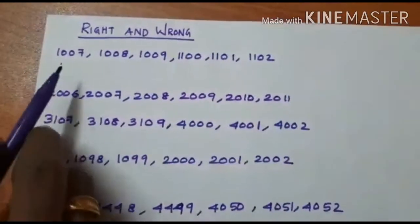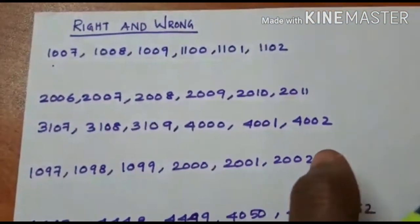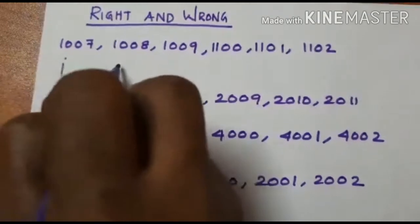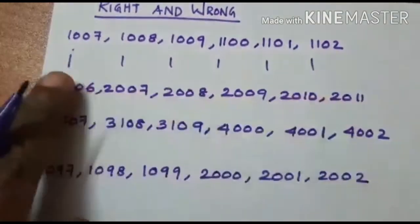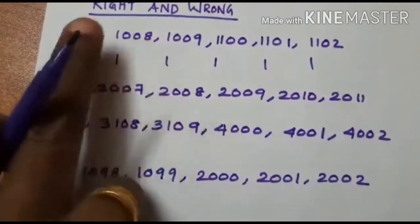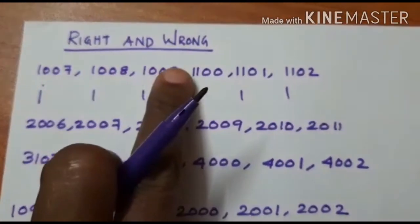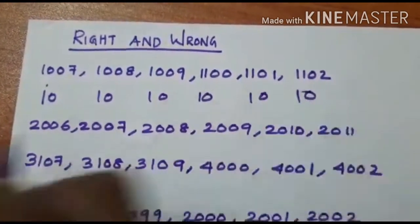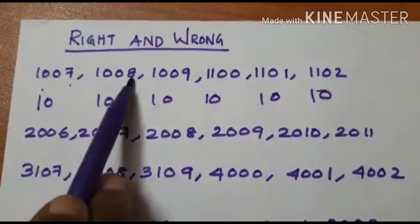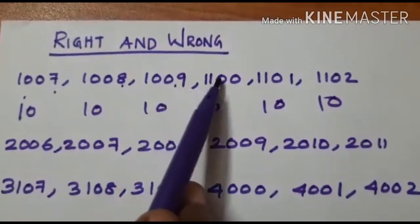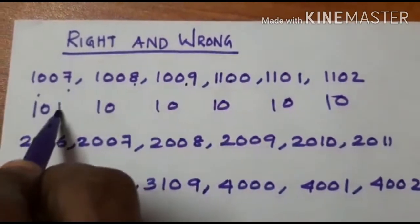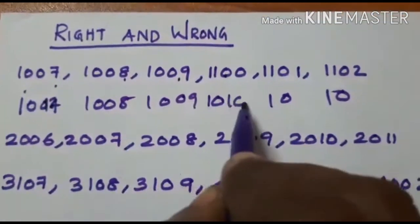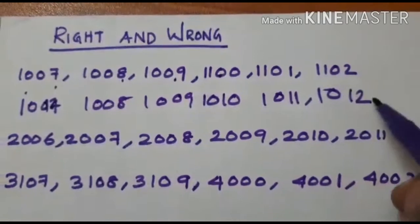The first digit is the same in all numbers — that is 1. Here also 1 in all the numbers. Then 7 changes from the unit place: 7, 8, 9. Therefore the second digit is also the same. Then 7, 8, 9. Then after 9 comes 10. Note: 0, 0, 0, 0, 0, 0. This is the corrected pattern. This is wrong.